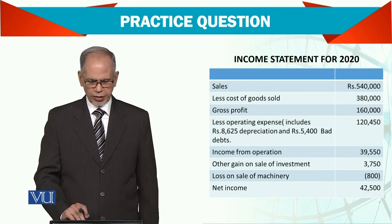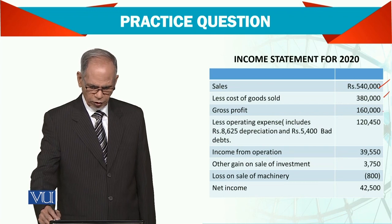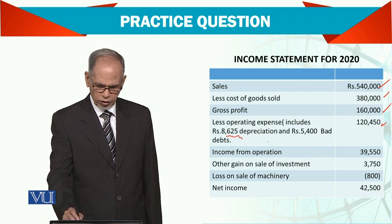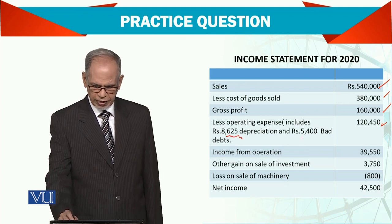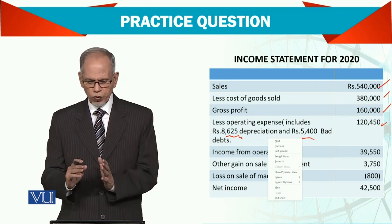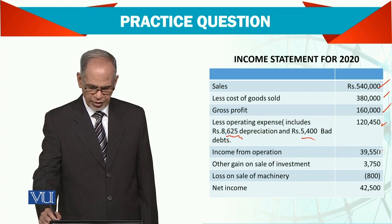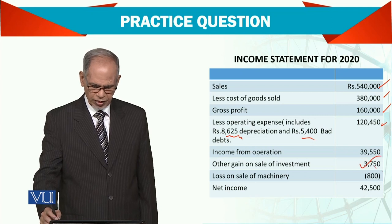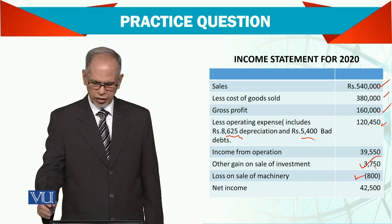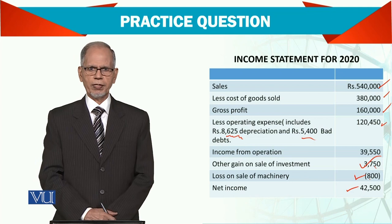Now the income statement is also there. Sales, cost of sales, gross profit, operating expense. Note here: depreciation is included in this, as well as bad debts included in this — so we need to see how these two figures will be taken care of when we are preparing the statement. Then income from operations, gain on sale of investment, loss on sale of machinery, and the net income for the year is 42,500.